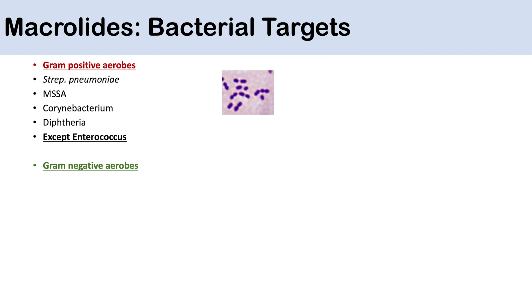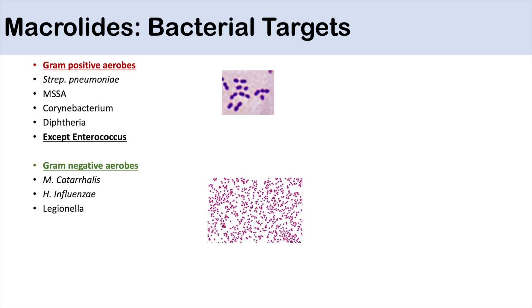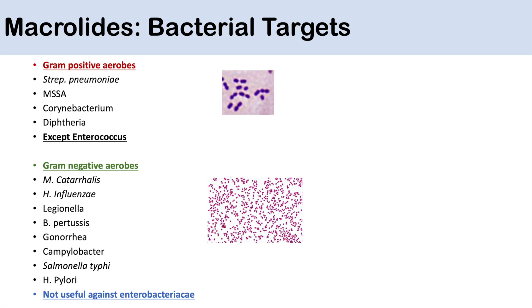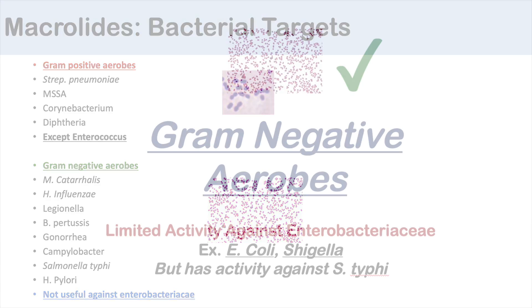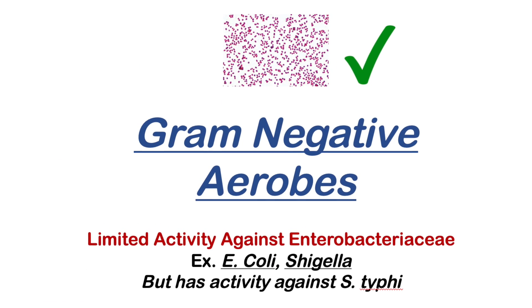Macrolides are also good for gram-negative aerobes. They can treat Moraxella catarrhalis and H. influenzae. They're also good for Legionella, Bordetella pertussis, gonorrhea, Campylobacter, and Salmonella typhi. Another one they're good for is Helicobacter pylori. However, they are not useful against Enterobacteriaceae. So macrolides are good for gram-negative aerobes except for Enterobacteriaceae.